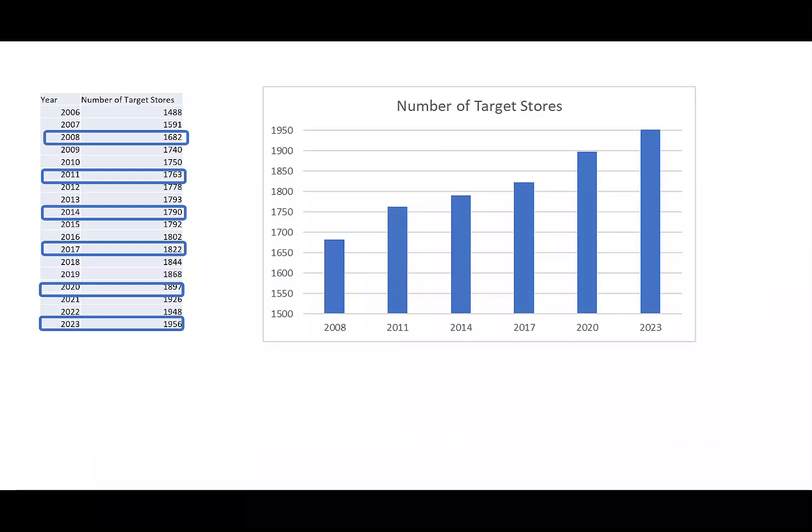The graph on the right displays the number of target stores by year. Notice it starts at 2008, goes to 2023, but only gives every three years in the graph. The graph shows a very steep growth in target stores over the time period.